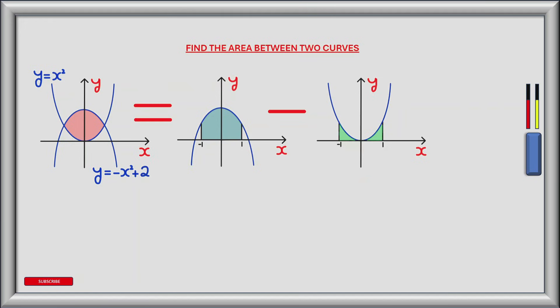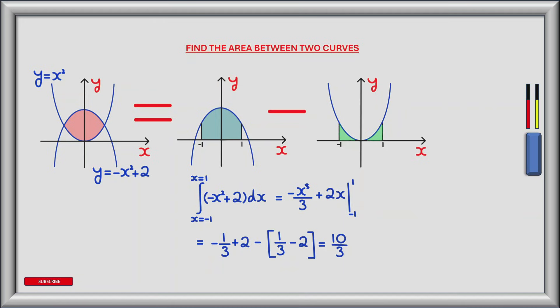So let's start by finding the area of the blue shaded region. To do this we can integrate the function y equals minus x squared plus 2 between the limits of x equals minus 1 and x equals 1. The antiderivative of this is minus x cubed divided by 3 plus 2x, evaluated between x equals minus 1 and x equals 1. Plugging in the limits gives minus 1 third plus 2, minus the bracket of a third minus 2, and evaluating this gives 10 divided by 3.